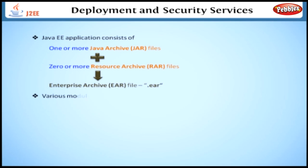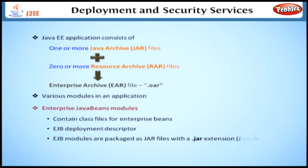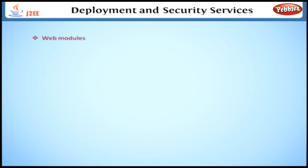Let's look at the various modules in an application one by one. Let's start with Enterprise Java Beans modules. These modules contain class files for Enterprise Beans EJB deployment descriptor. EJB modules are packaged as JAR files with a .JAR extension. Web modules contain JSP files, class files for servlets, GIF and HTML files.